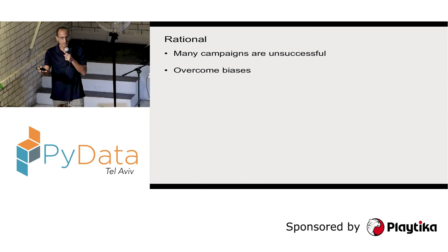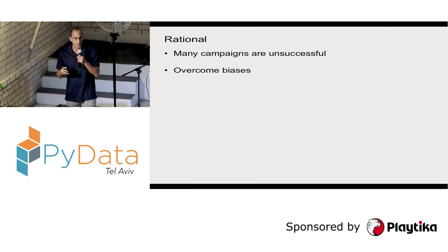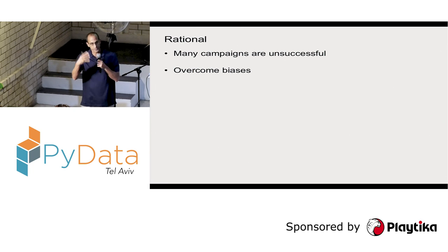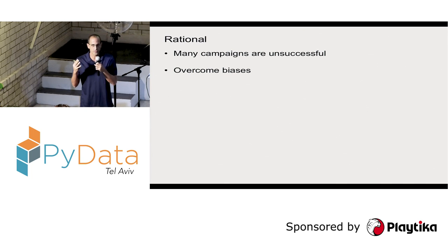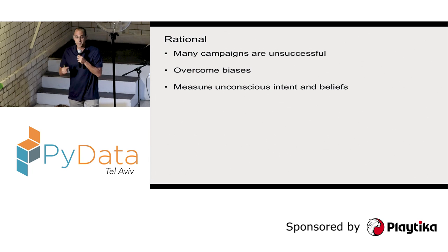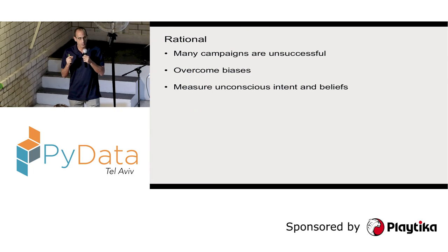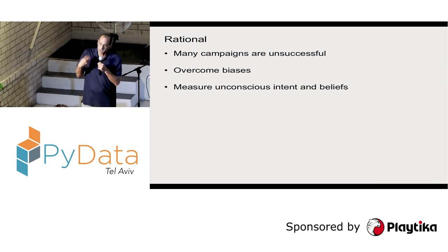For example, when you give people questionnaires, in many cases they will not say what they truly believe, or they don't even know exactly what they're going to choose in the future. There are many biases. In focus groups, usually there will be a dominant person who says what they think and the other people just nod — but it's not really what they think, or they're embarrassed to admit certain preferences that will actually be reflected in their real choices.